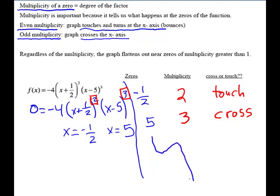Not to scale, but just to give you an idea. This would be like the negative 1/2 where it's going to touch. This would be like the 5, where it's going to cross because of the multiplicities. At an even one, it's going to turn around. With an odd multiplicity, it will cross.